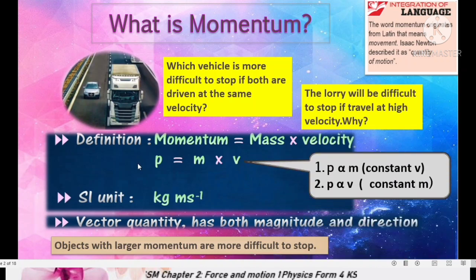From this formula, what we can say about the relationship between momentum and mass and also momentum and velocity. When the value of v is constant, the momentum is directly proportional to mass. Thus from this situation, if the car and the lorry are driven at the same velocity, momentum of the lorry is greater than momentum of the car.